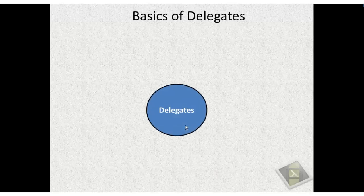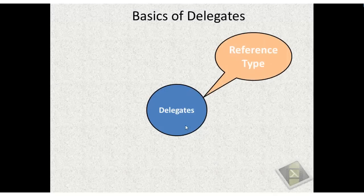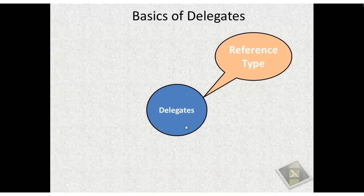.NET Framework has broadly classified types into two categories: value type and reference type. Structures are value types while classes are reference types. On similar lines, delegates are also reference type.